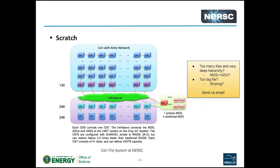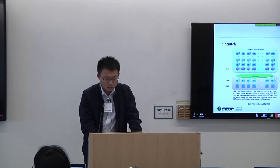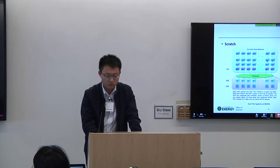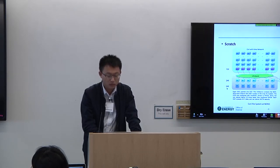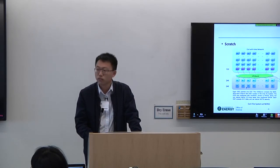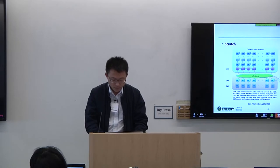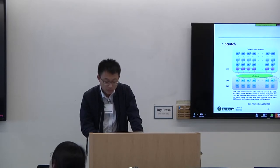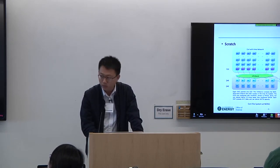Here's another diagram showing how the Scratch file system is connected to the Cori computer. On the top are the Cori compute nodes. We have 130 LNET routers, and those routers connect the compute nodes with the Scratch file system. In terms of number of OSTs, we have 248 — meaning you can stripe your data across at most 248 object storage targets. There are also five metadata servers: one primary and four additional.